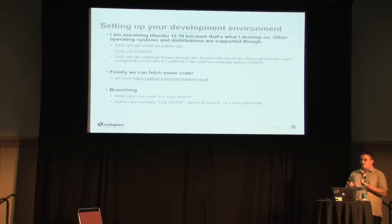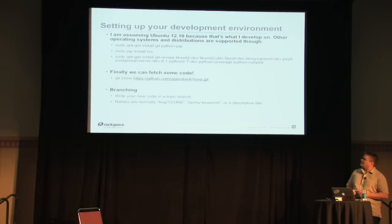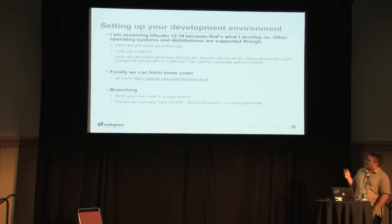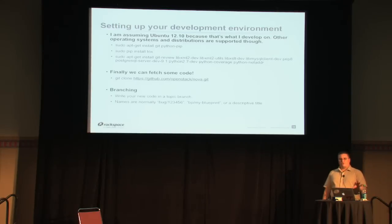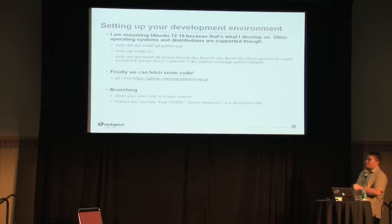You need things like Python, obviously, and MySQL and Postgres bindings before the unit tests will pass. Then we can finally fetch some code — so that's kind of exciting. Git-review is packaged now. If you've used Git before, this bit should not be surprising: you can just clone the source code and there it is. Because we use Tox, all of the unit tests — if you just wanted to grab the code and run the unit tests as a first step — that would be a reasonable thing to do.